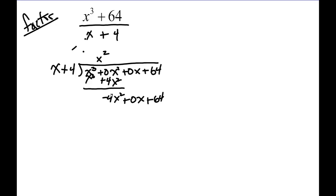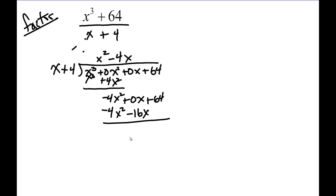So you ask yourself: how many times does x go into negative 4x squared? That's negative 4x times. So negative 4x squared, then do the multiplication: minus 16x. We subtract, and if we subtract again we get positive 16x plus 64.